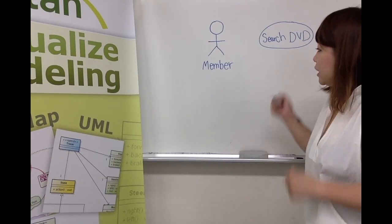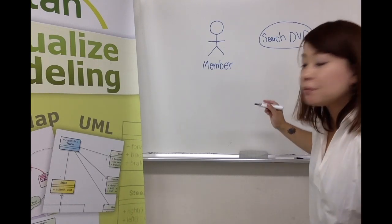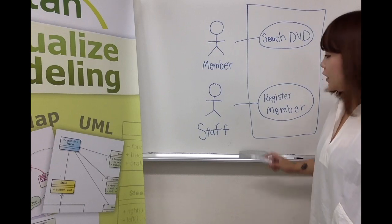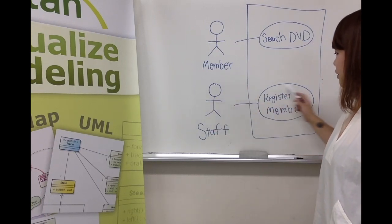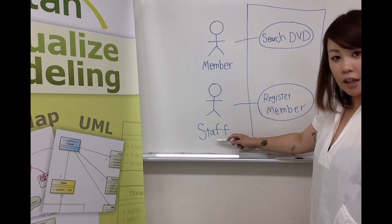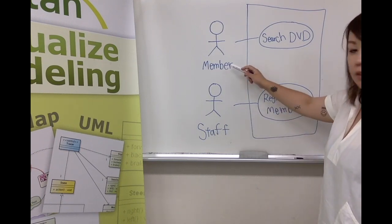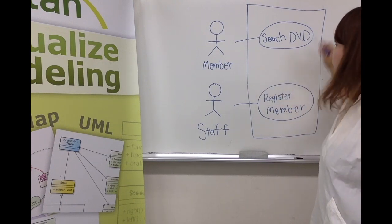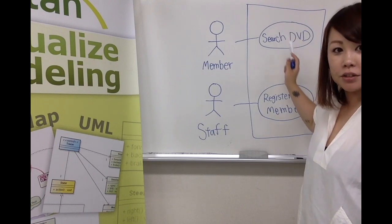Let me add some more actors and use cases to complete this diagram. I added another actor named staff and another use case which this staff actor participates in, which is registering a membership for the member on the system. And this rectangle is called subject or system boundary.